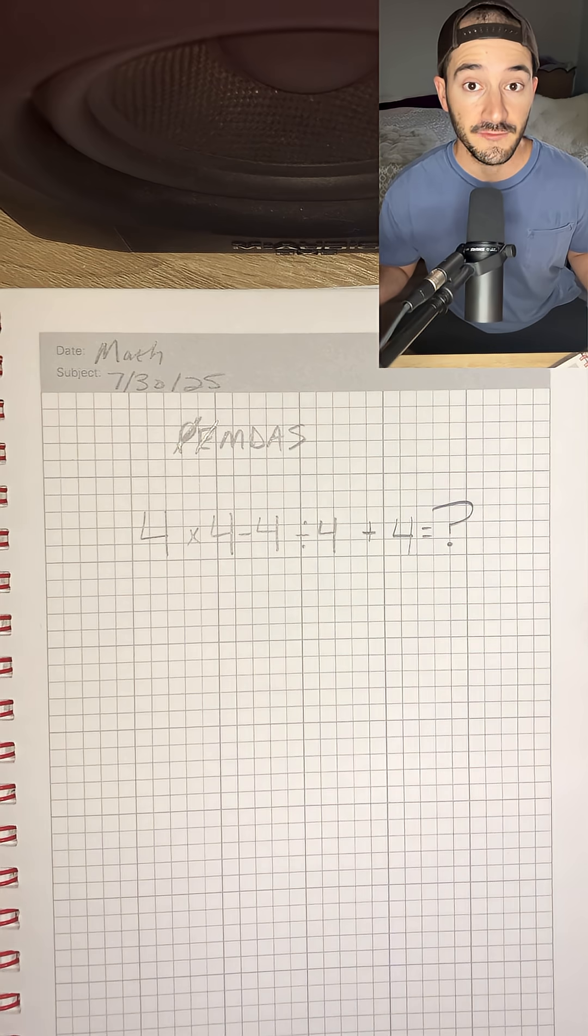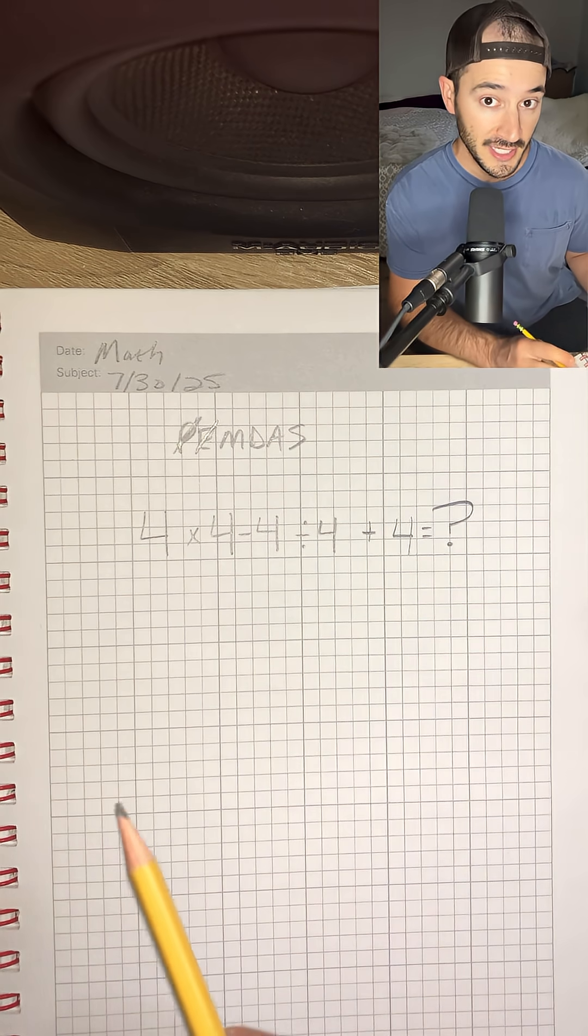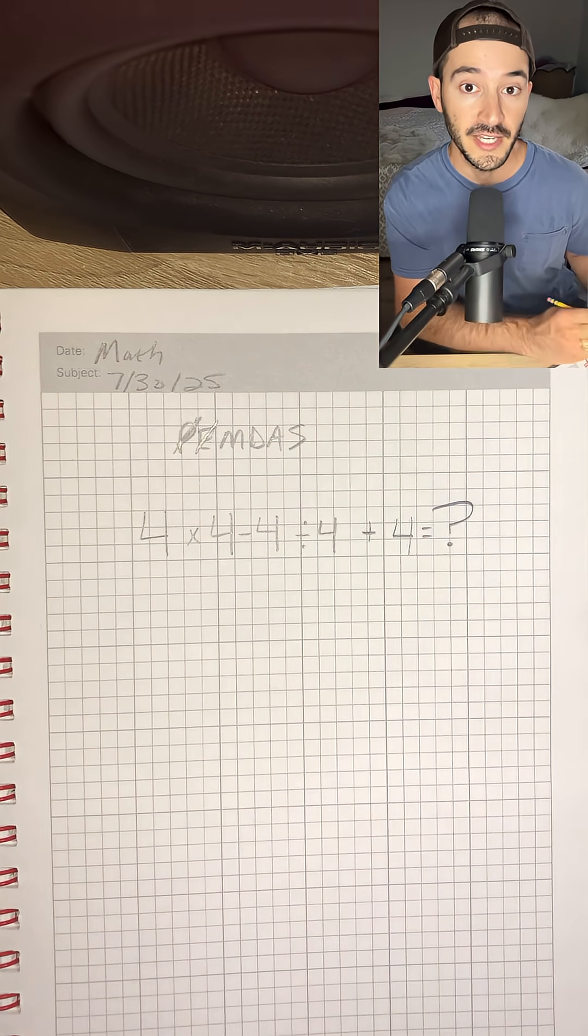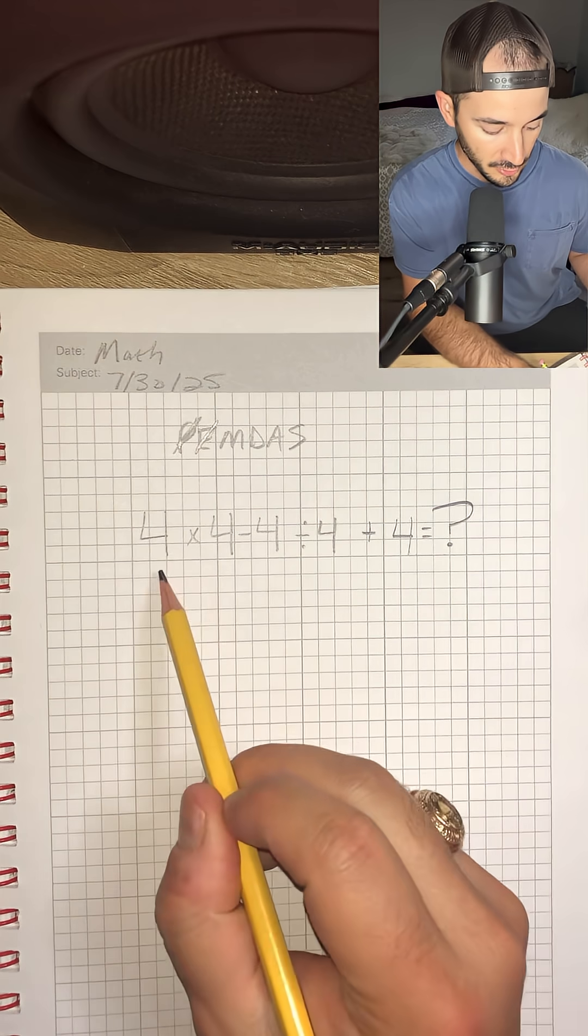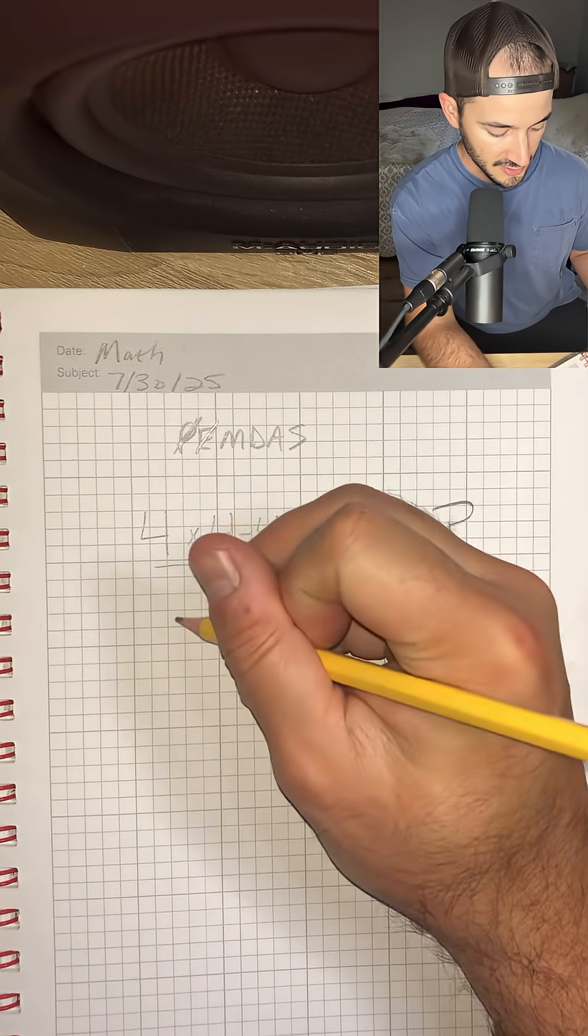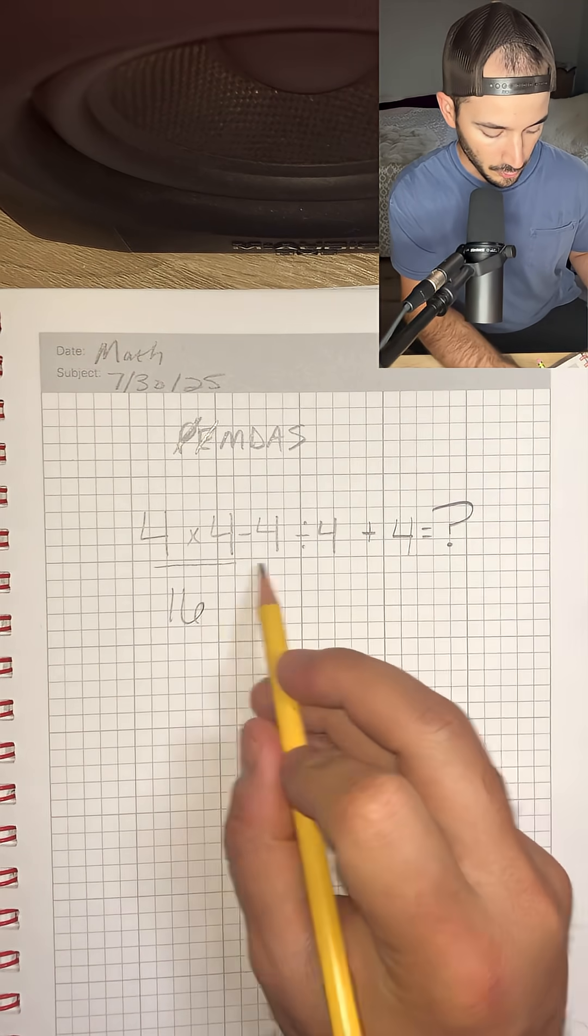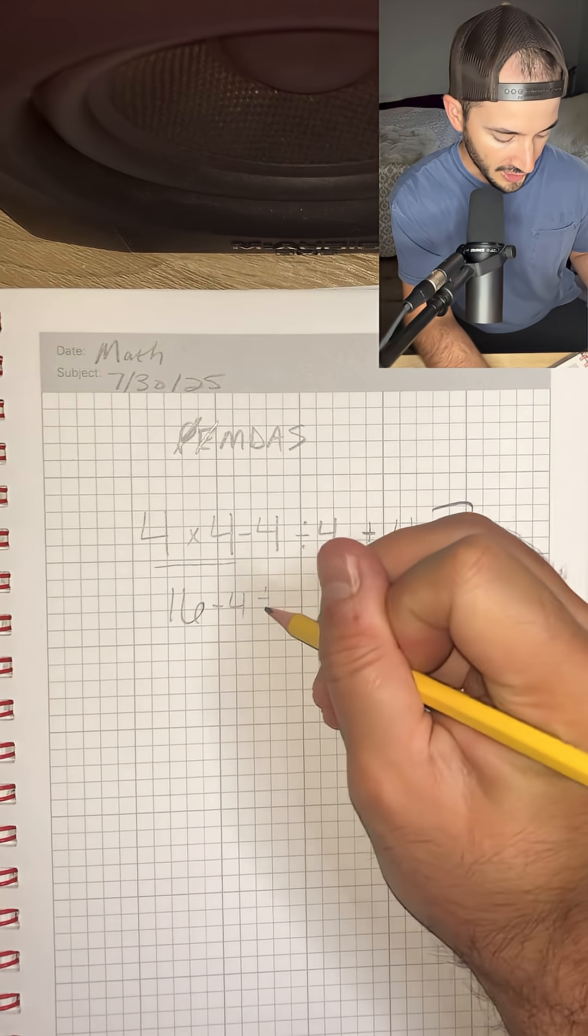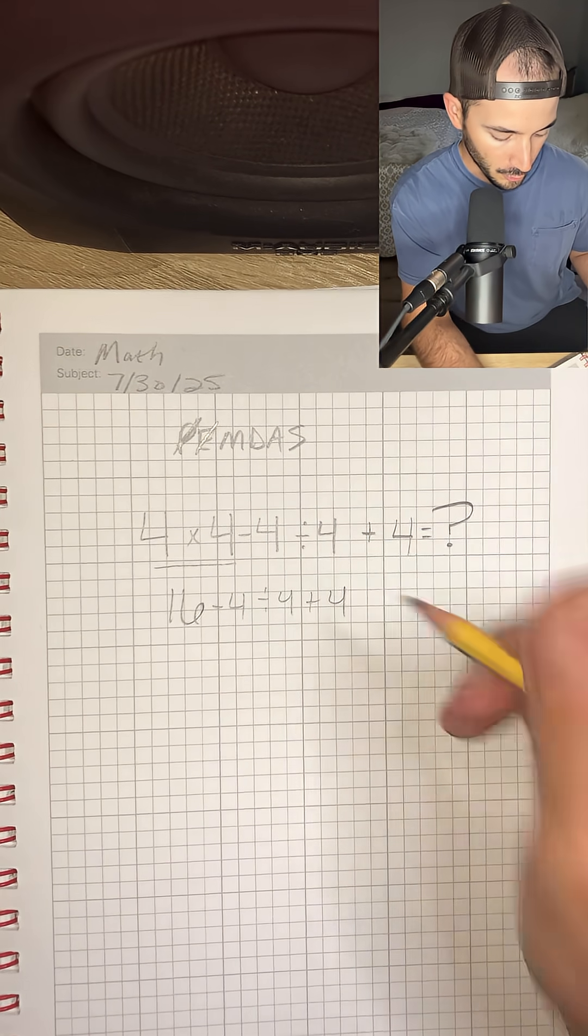Now, when we get to multiplication and division, we actually do multiplication and division on the same level from left to right. So that means we're going to do 4 × 4 first to get 16. We're going to write the rest of this: -4 ÷ 4 + 4.